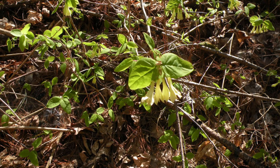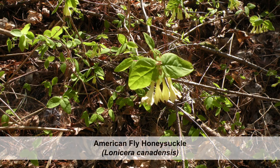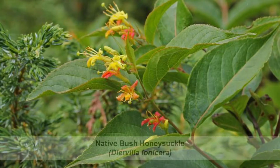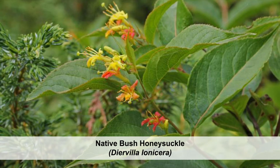There are a few native look-alike honeysuckle species to be aware of. In particular, American fly honeysuckle and the less common native bush honeysuckle. Both native species have a solid pith rather than the hollow pith of the invasive species. In addition, native bush honeysuckle has a toothed leaf margin, differentiating it from the smooth leaf edges of the invasive shrub honeysuckles.